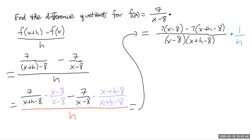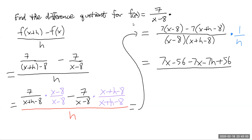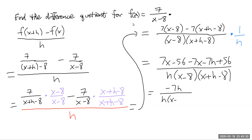So why is that handy? Let's keep working through the problem. We get 7x minus 56, minus 7x minus 7h plus 56. All over h times x minus 8 times x plus h minus 8. So what's really in the numerator? There's really just a negative 7h up there.